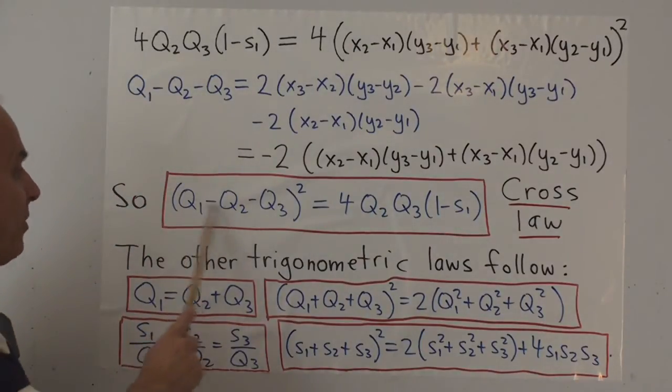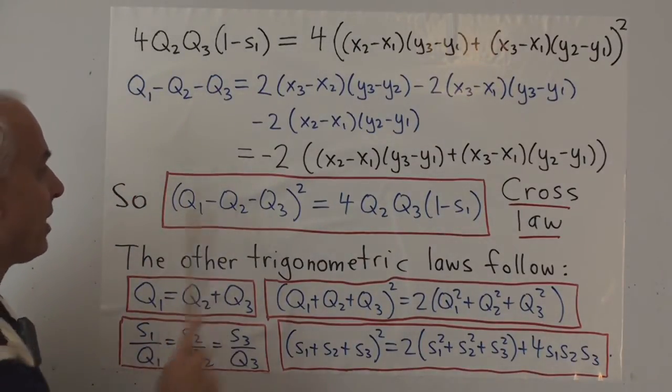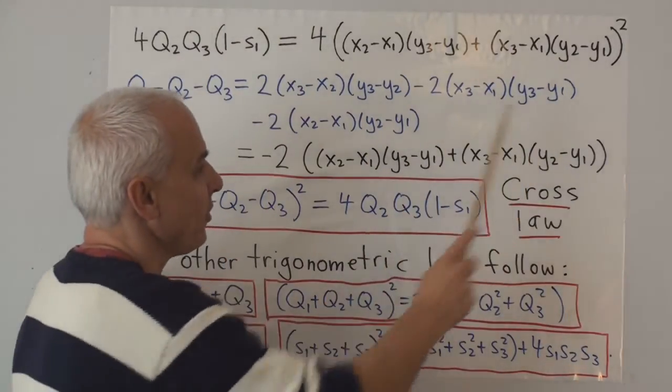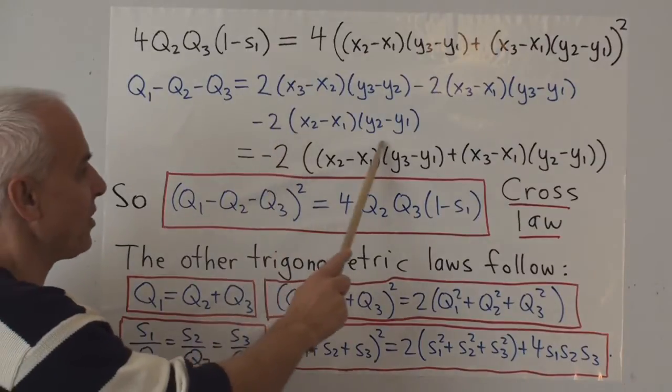And the left-hand side, well, let's look at Q1 minus Q2 minus Q3. There's Q1. We're subtracting Q2 and also subtracting Q3.